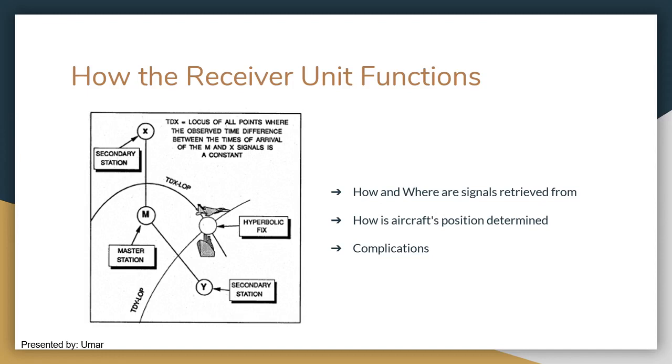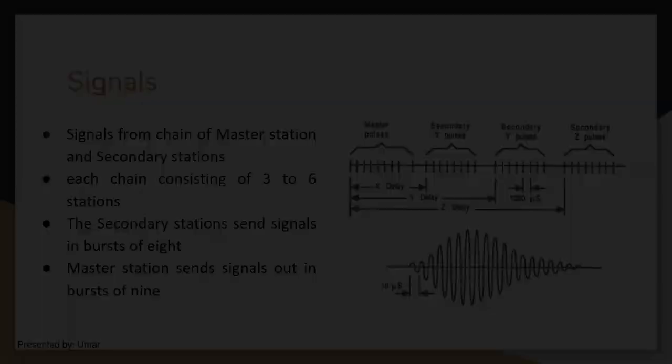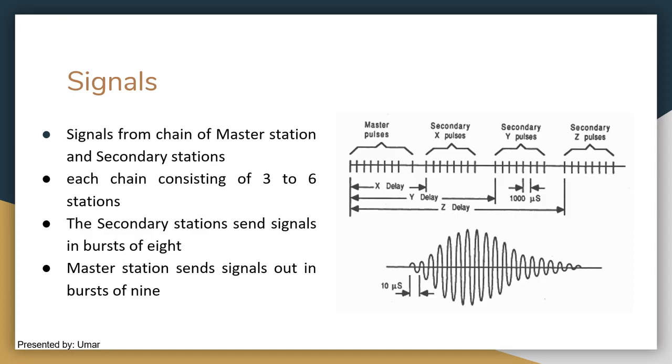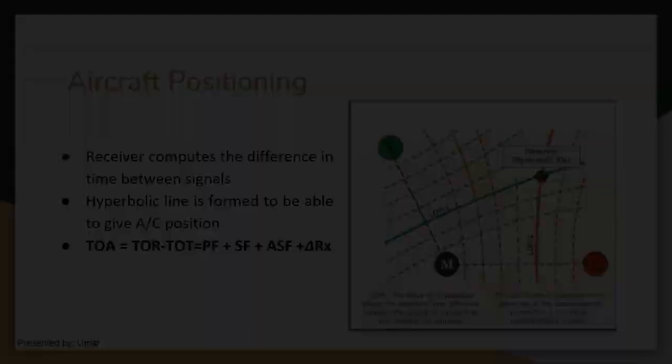How the receiver unit functions. I will be talking about how and where the signals are retrieved from, how the aircraft's position is determined, and some complications with the signals. The receiver receives signals from a chain of master and secondary stations, with each chain consisting of three to six stations. The secondary station sends signals in bursts of eight, while the master station sends signals in bursts of nine. This allows it to be easily distinguishable from the secondary station. The stations send out a synchronized radio signal based around 100 kHz at approximately the speed of light. The closer station signal would reach the receiver sooner than the further station. From this, the receiver computes the difference in time from both stations, and this will repeat as the aircraft moves, thus allowing the difference in signal timing to be observed.